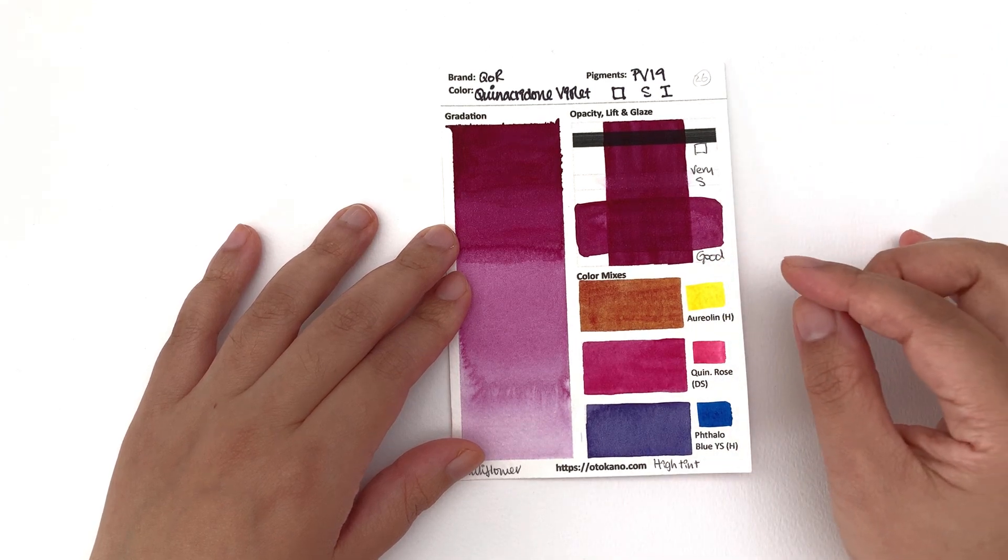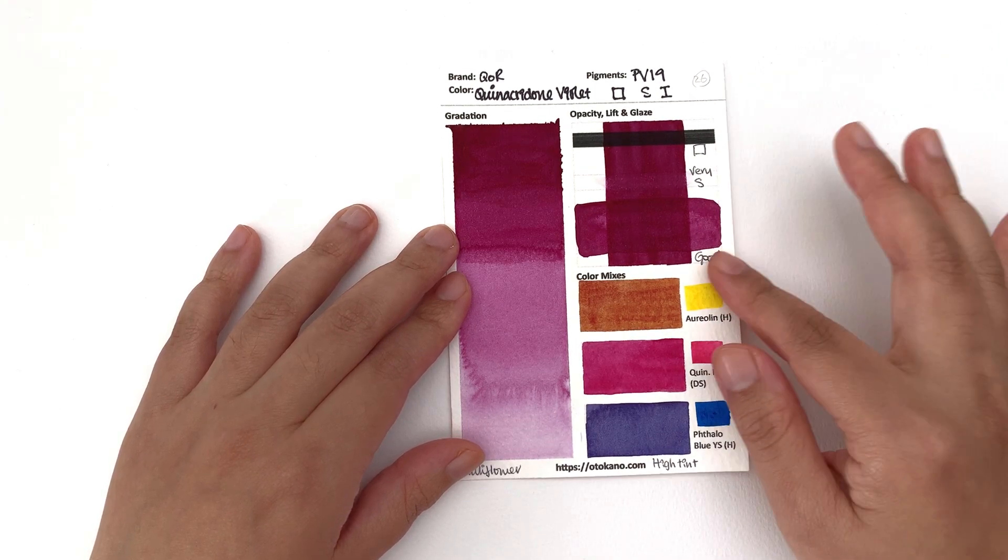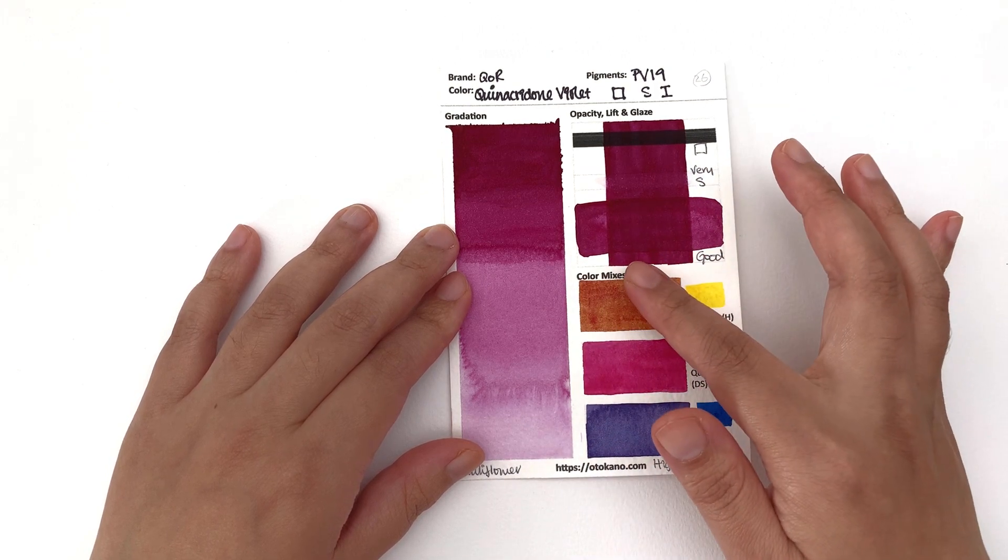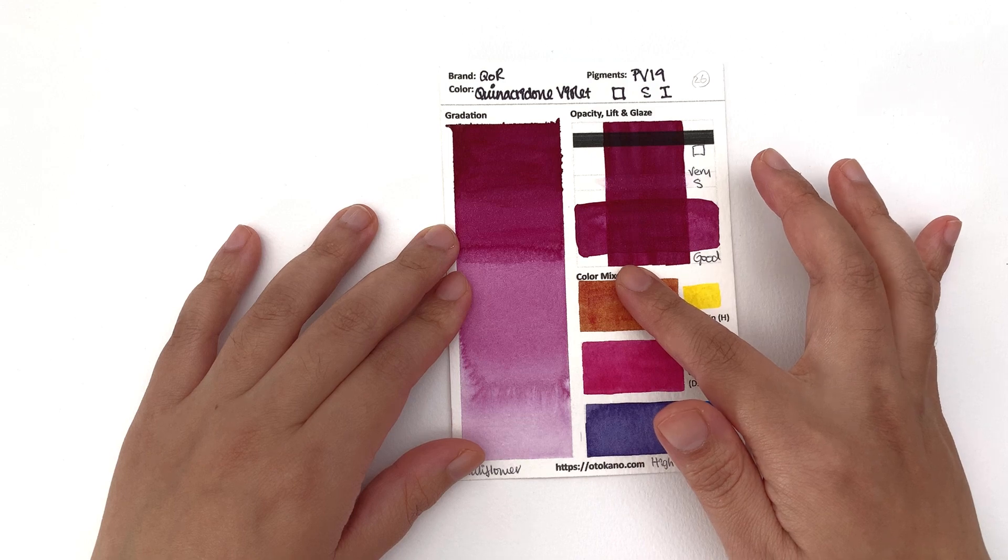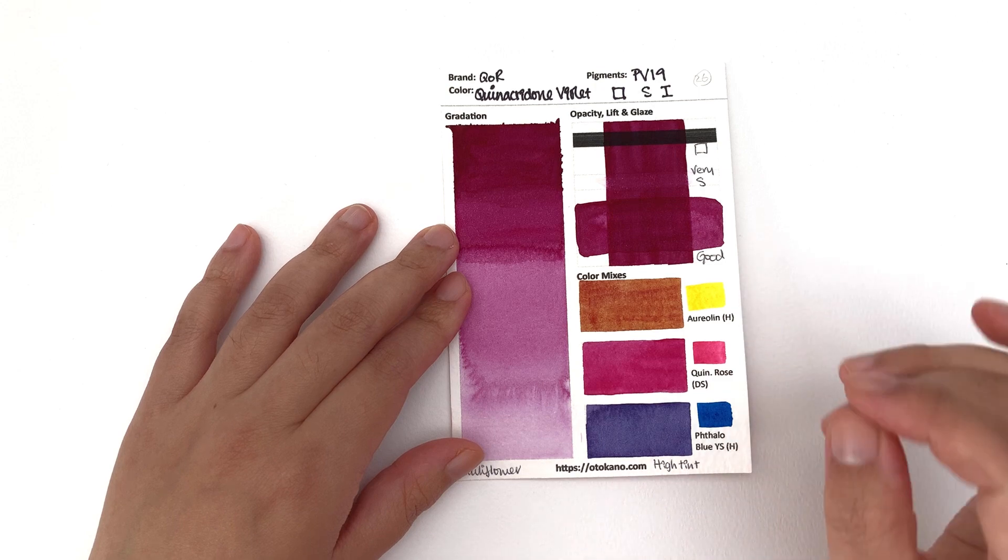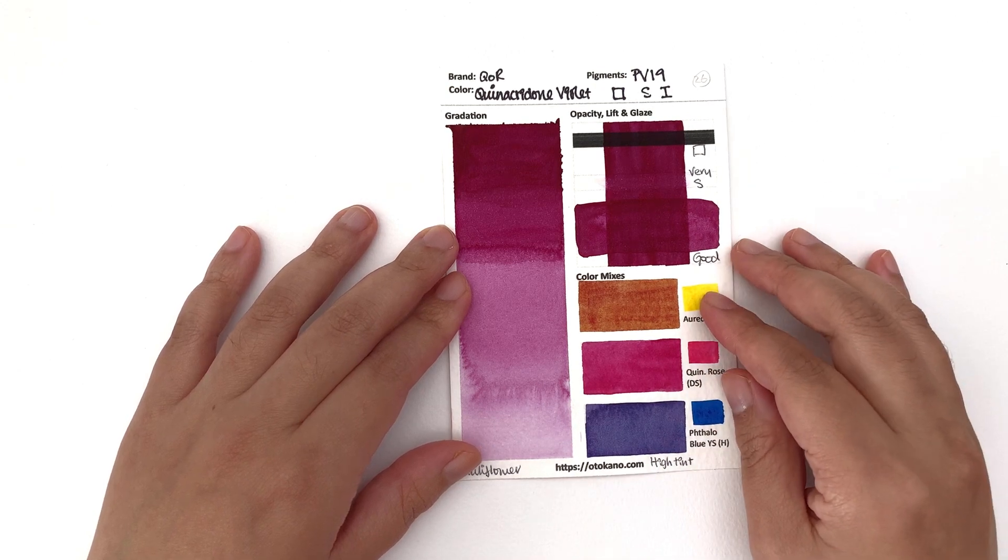Because of that staining power you actually get really good layering. It's transparent and heavily staining so the bottom layer is not going to lift on you easily and you get to see very clearly where the two layers overlap. So very ideal for doing lots of layers with.